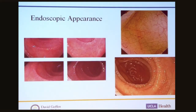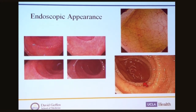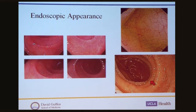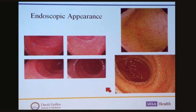This is an example of the classic endoscopic appearance of celiac disease. There are three hallmarks: scalloping, which is a notching appearance of the folds; a mosaic or nodular pattern; and a general flattening or loss of the duodenal folds. This is the classic endoscopic appearance.